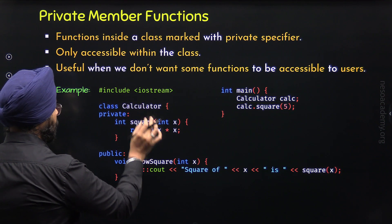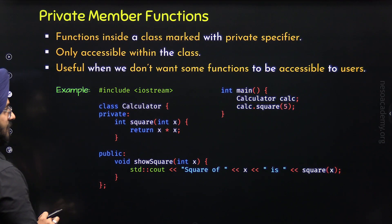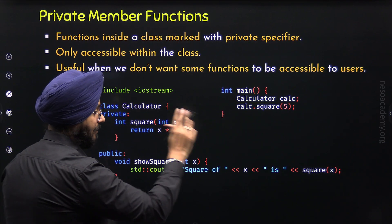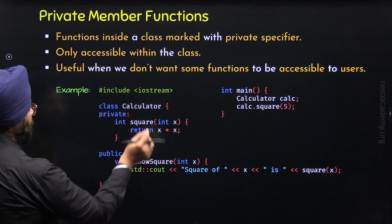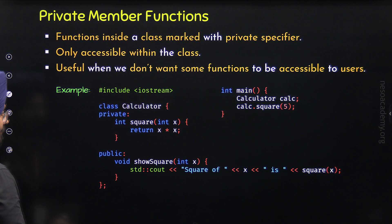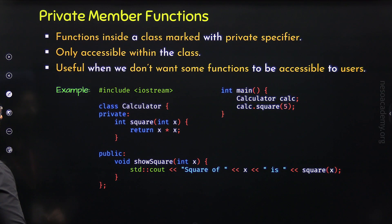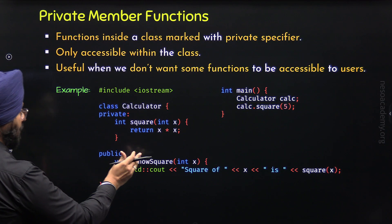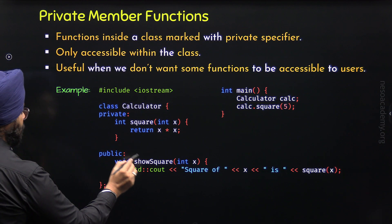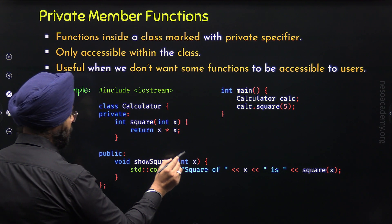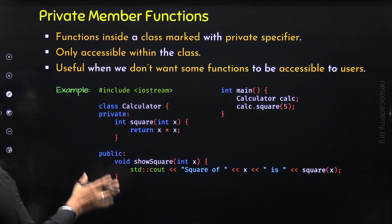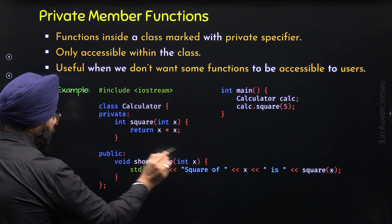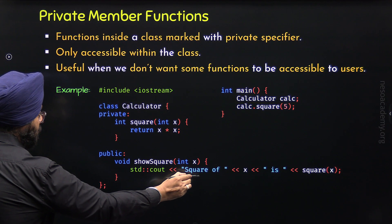We can call the square function within the class, but we cannot call it from outside the class. Even if we create an object of this class and try to call this function, we would not be able to do so. Now, moving to the public member function: here we have show_square, which has a return type of void and a parameter x of type integer. As the name suggests, it displays the square of x using a std::cout statement.